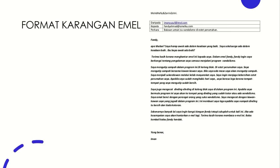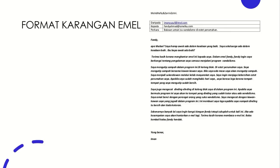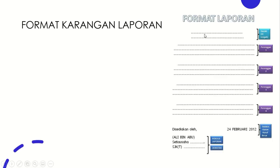This is the format karangan email, since it's a hot repeated question in past years. You should have Daripada — From, Kepada — To, and Perkara — the Subject. The receiver's name goes at the top and the sender's at the bottom. For format karangan laporan, at the top you should have the tajuk, then your paragraphs, and at the bottom — disediakan oleh, prepared by — with your signature, name, position such as Setiausaha or Secretary of the club, your school name, and the tarikh. The month in the tarikh should be in capital letters, and make sure you spell the month in Malay correctly.